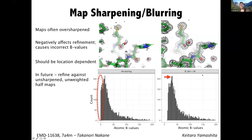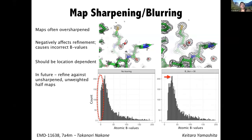If you blur the map by a certain value — here we're blurring by 30 Ångström squared — we can see that the whole distribution shifts towards the right, so the atomic B-value distribution becomes more reasonable and the map is much more interpretable. Selecting an appropriate blurring or sharpening factor is important. Due to the spatially heterogeneous signal-to-noise ratio and local resolution, the level of B-factor blurring and sharpening that should be applied really should be location-dependent. That's not something we're doing today, but in the future we want to be refining against unsharpened, unfiltered half maps.